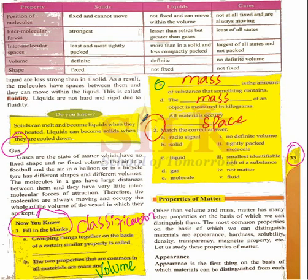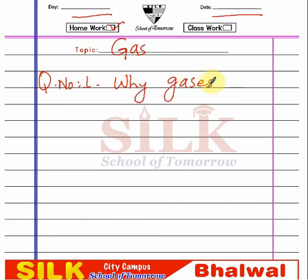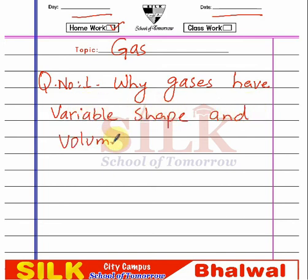Dear students, if you look at the top of the page, the properties of solid, liquid, and gases are mentioned. Now we are moving towards homework. Number one: you have to fill in the blanks and match the column. You also have to answer one question about gas: Why do gases have variable shape and volume? This question asks why the shape and volume of gases change. I will tell you about it.